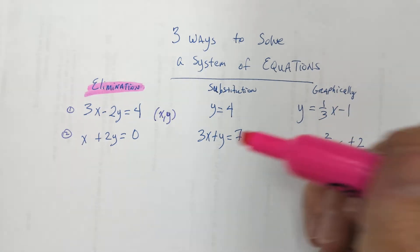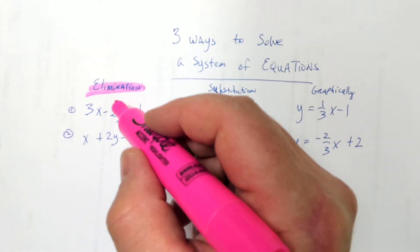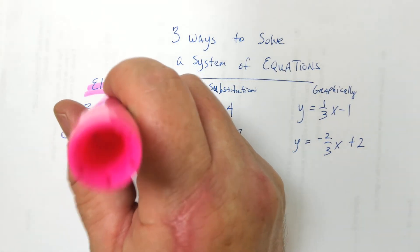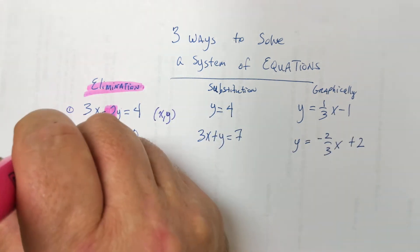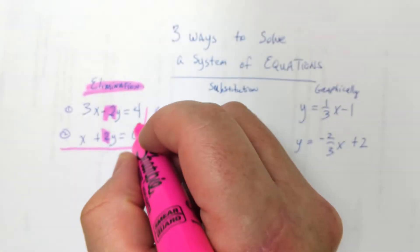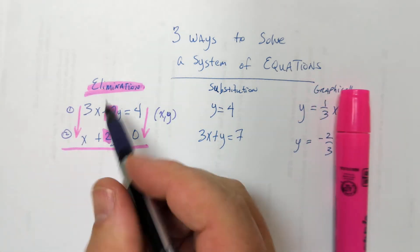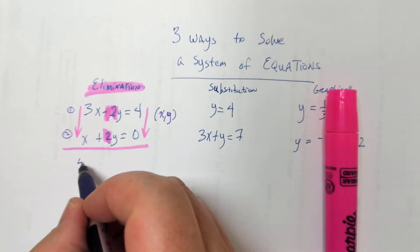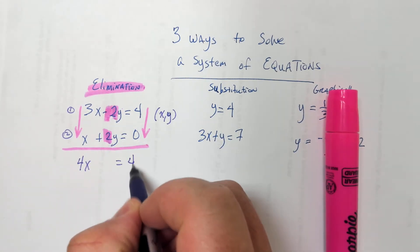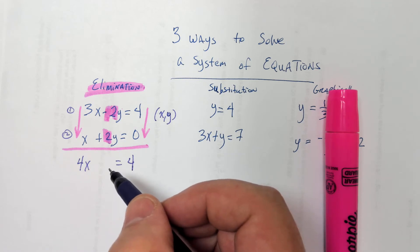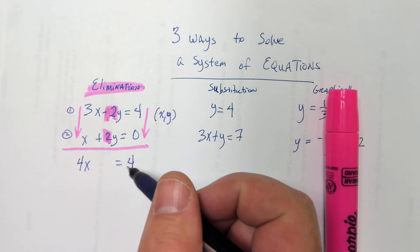No? So check this out. Do you see the coefficient for y is negative 2 right here? Do you see that? And the coefficient for the other y is positive 2. So when I literally just add these two equations together, those y's are going to just cancel.